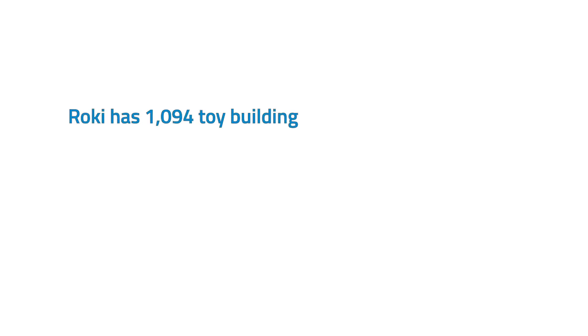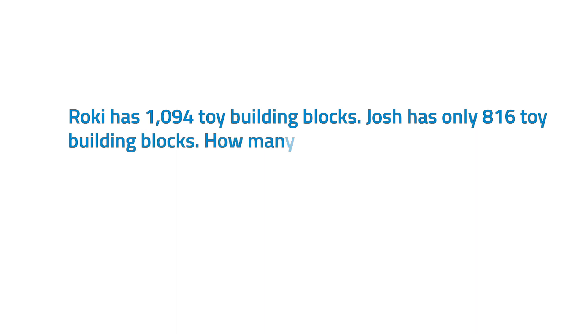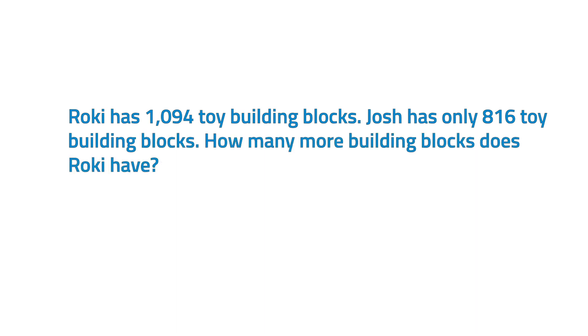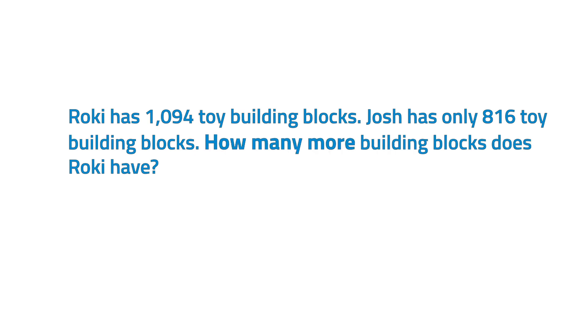Now, can you help me find the keywords that imply subtraction in this set of word problems? Let's start! Roki has 1,094 toy building blocks. Josh has only 816 toy building blocks. How many more building blocks does Roki have? The subtraction keyword in this word problem is 'how many more.'